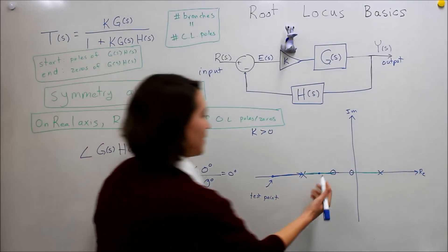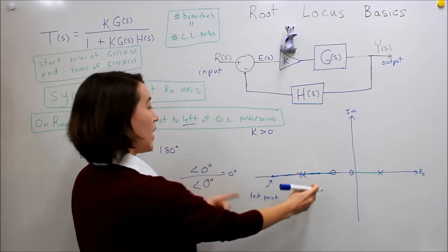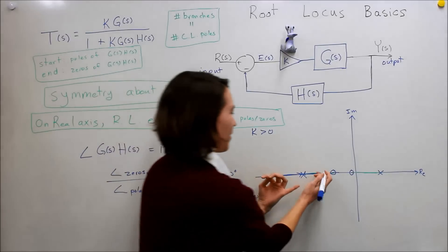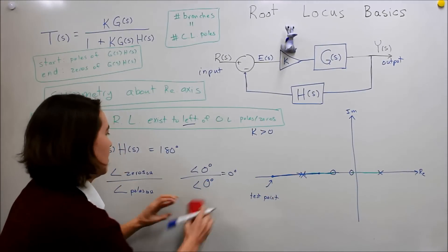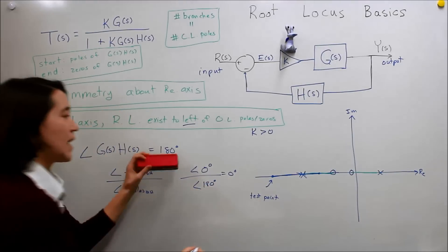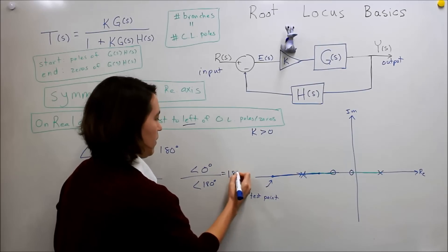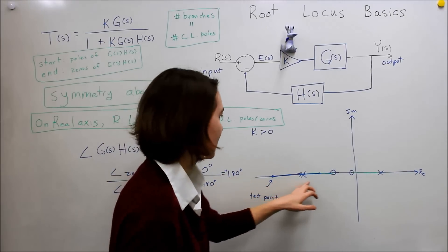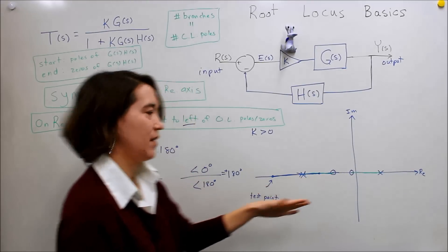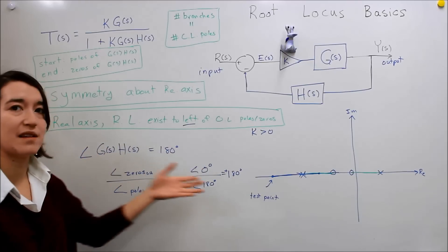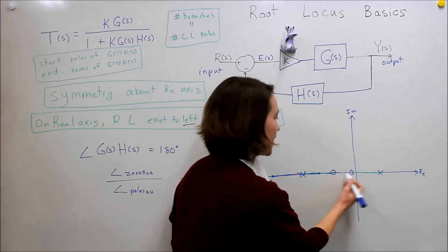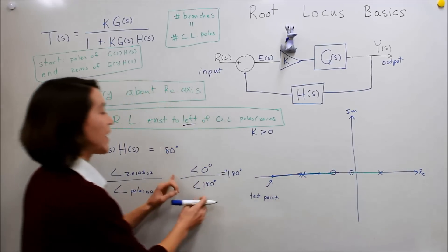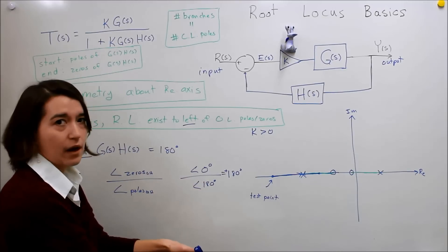If we take a test point between two poles, the only thing we're changing is the direction of one vector — now one pole points at negative 180 or positive 180, and the other still points at zero. That changes the pole angle sum by 180 degrees. When we subtract it, we get negative 180, which is the same as positive 180 — so it matches the angle condition. Every point between those two poles satisfies the angle constraint, confirming the root locus exists there.